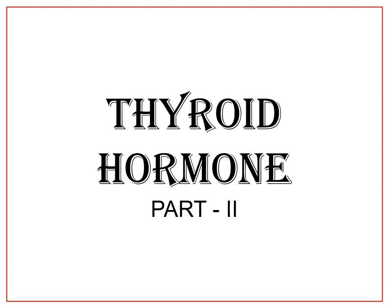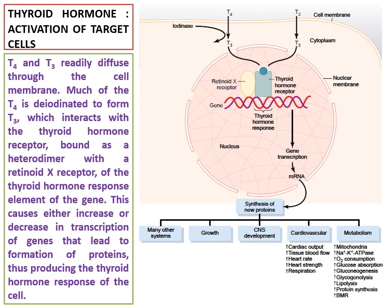Today's class is about thyroid hormone. Regarding the mechanism of action of thyroid hormone: T4 and T3 readily diffuse through the cell membrane. Much of the T4 is deiodinated to form T3, which interacts with the thyroid hormone receptor bound as a heterodimer with a retinoid X receptor at the thyroid hormone response element of the gene.